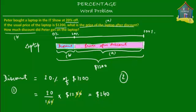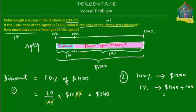Now let me show you method number two. We know that 100% is equal to $1,200. So 1% is equal to $1,200 divided by 100, which equals $12. So if 1% equals $12, then 20% equals $12 times 20, which is $240 — the same answer as method one. And if you have a calculator, simply punch in 20% times $1,200 and you still get $240.